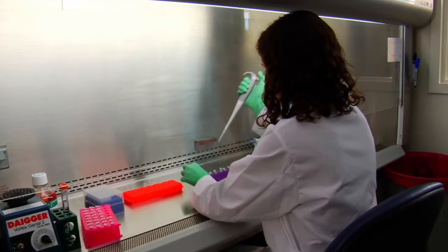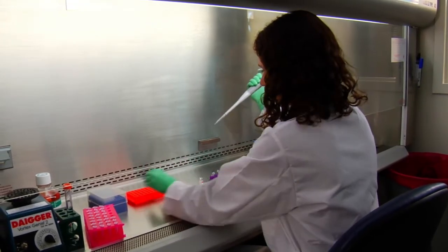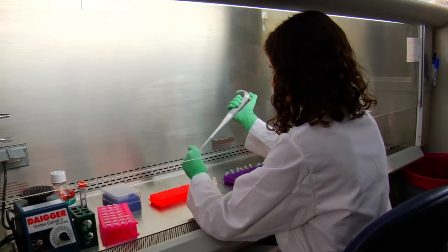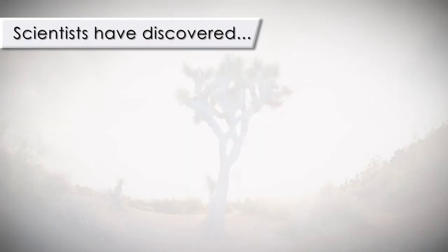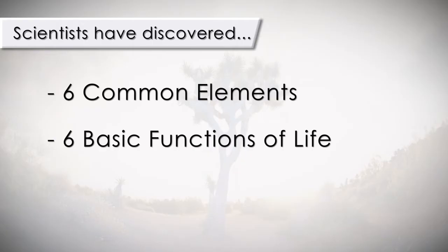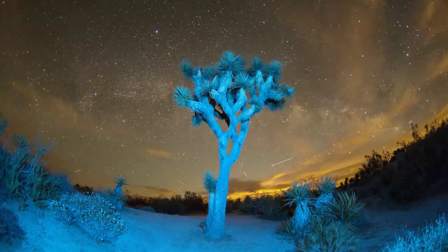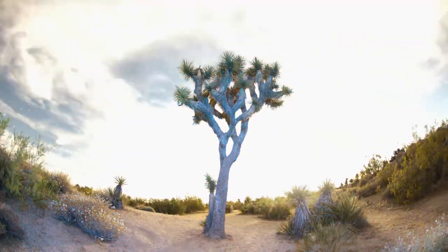The purpose of the Health Science Technology Principles course is to only address what scientists so far have discovered. Scientists have discovered that there are six common elements that make all life possible on this planet, and that all living organisms here must satisfy six basic functions of life, if they are to sustain life throughout its assigned life cycle.